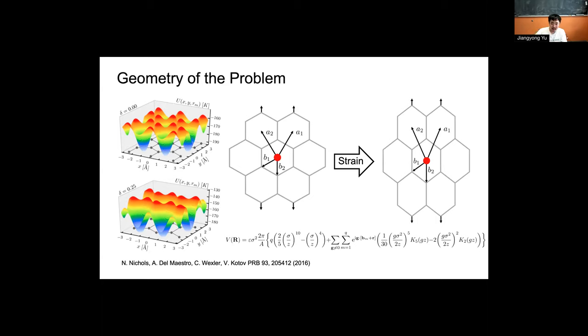when we start adding strain, we see that in the direction along the strain, the potential barrier seems to get higher, while in the direction perpendicular to the strain, the potential barrier seems to get lower.